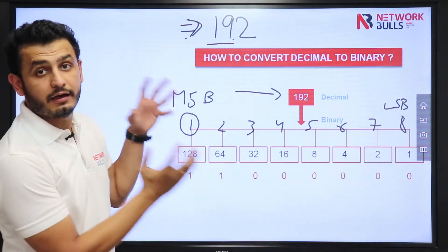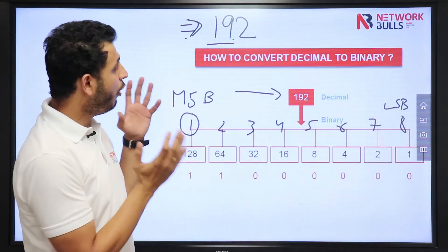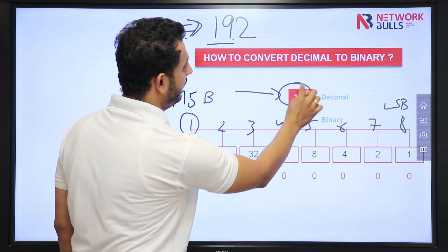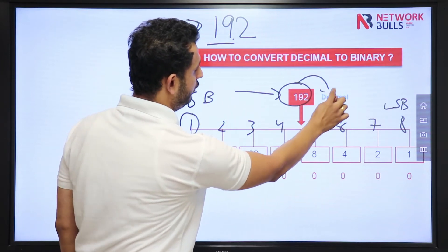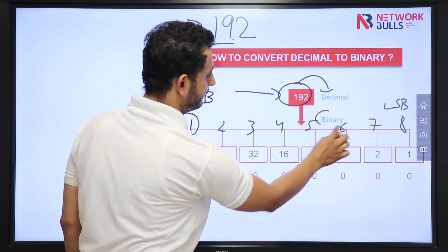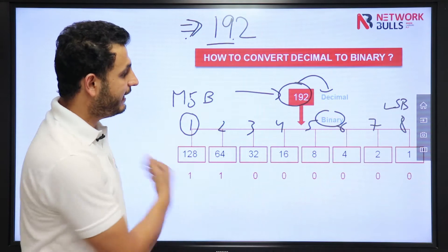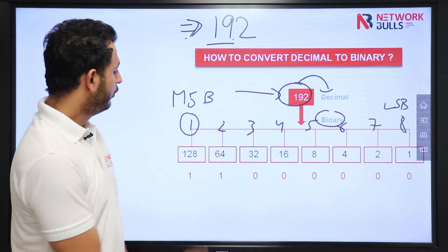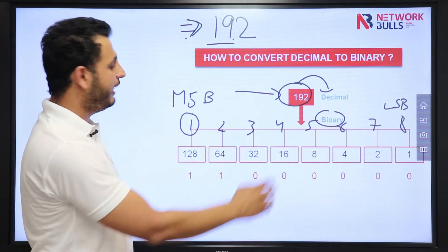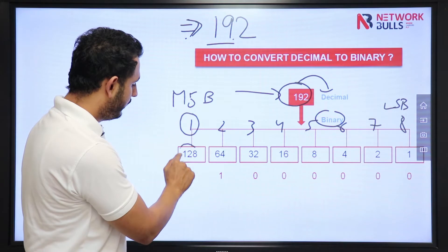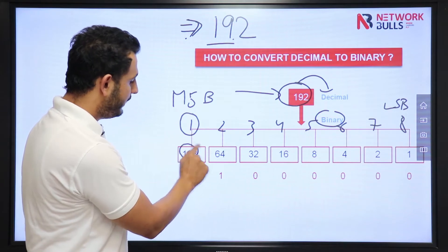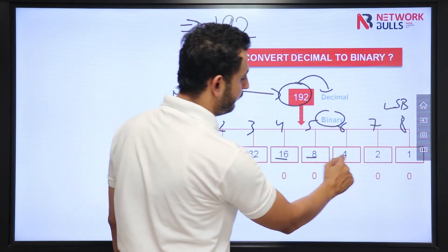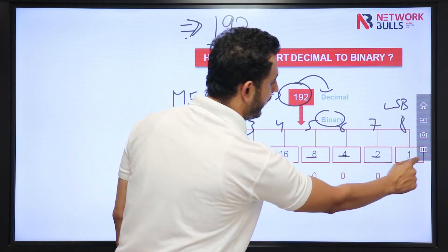Now the concern here is how we can write this decimal number into binary. In binary I have 8 bits, and these 8 bits are represented as 128, 64, 32, 16, 8, 4, 2, 1.